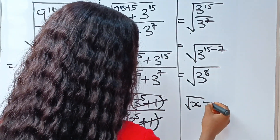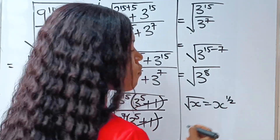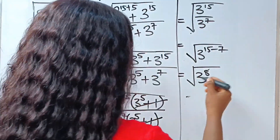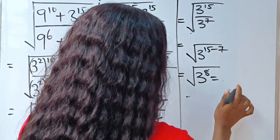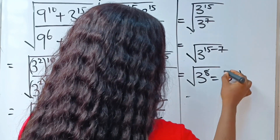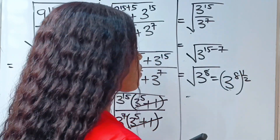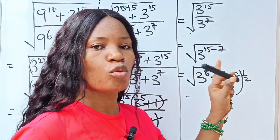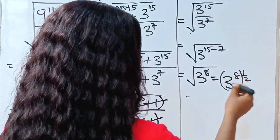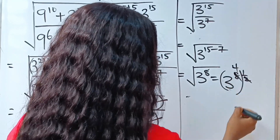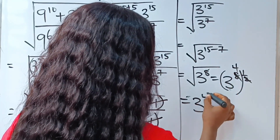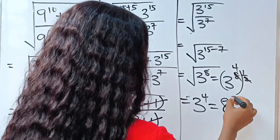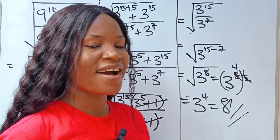Now the square root of x is equal to x raised to the power of a half. So we can rewrite this as 3 to the power of 8 raised to the power of a half. Recall that when you have two powers on a base, you multiply them together — 8 times a half gives us 4. So what we have is 3 to the power of 4, and 3 to the power of 4 is 81. This is our final answer.